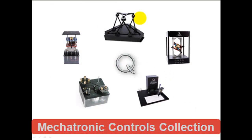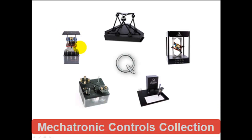On the top there, you've got the 6 degree of freedom hexapod. On the top right, you have the 3D gyro. On the bottom right, you have the 2 degree of freedom planar riding robot. On the bottom left, you have the industrial mechatronics drive unit. And on the top left, you have the active suspension system.